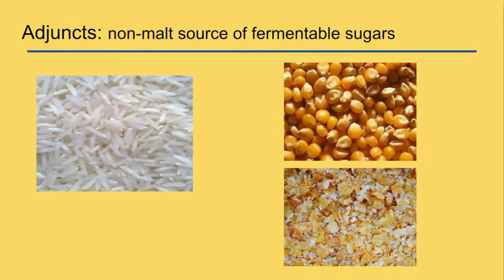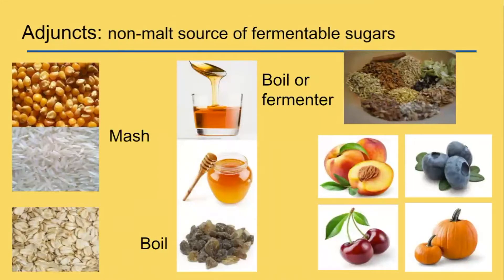Adjuncts also include many of these things. That bottom left picture there, those are rolled oats. You can use them for head retention and mouthfeel. At Fiction, we actually make a lot of New England-style hazy IPAs. The protein from these particular adjuncts allows for the haze in the beer as well as the soft mouthfeel that you typically don't get in a West Coast IPA.